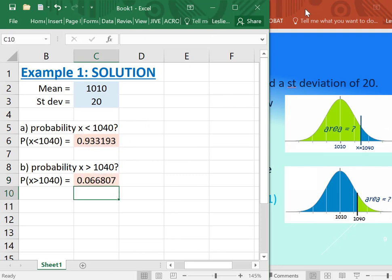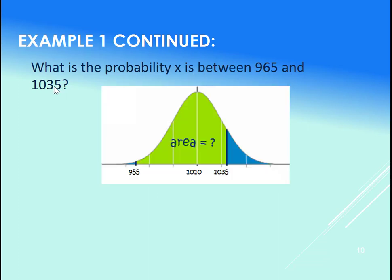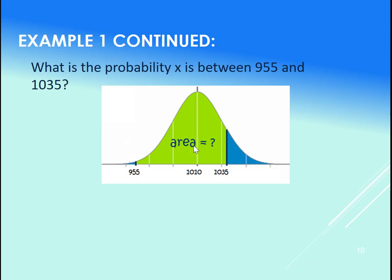Now finally, what if I wanted the probability of x being between two different values? So I want the area between two x values—let's say 955 and 1035. So we wanted this area here. Well, what we do is we subtract the two norm.dist. Take the larger one first, so the 1035 first, and then the 955. Let's try this out in Excel.